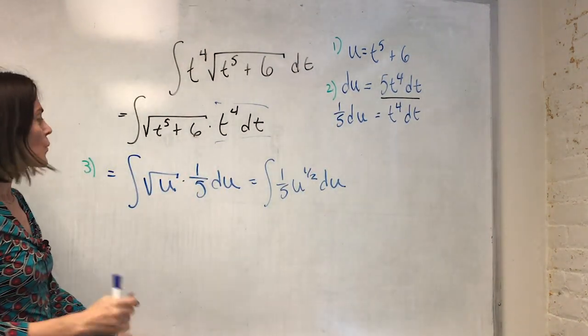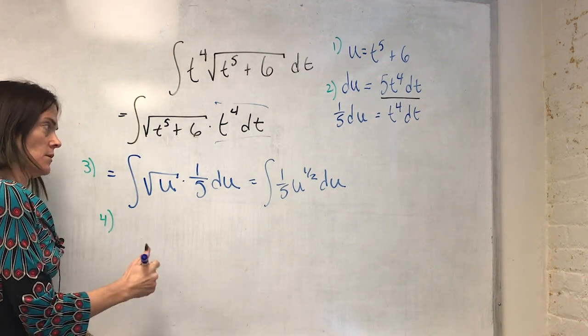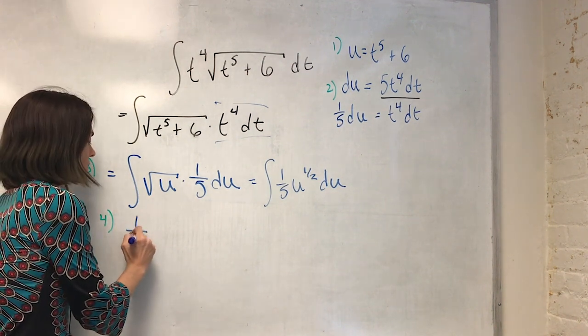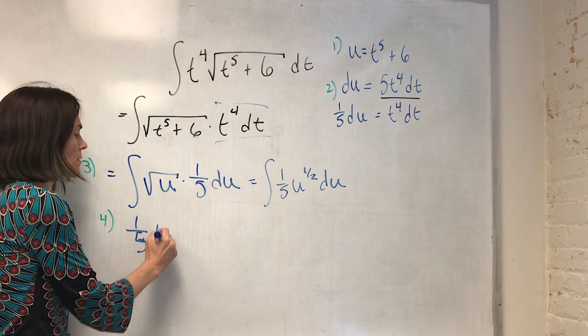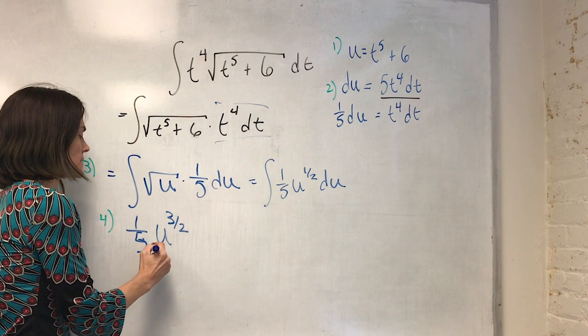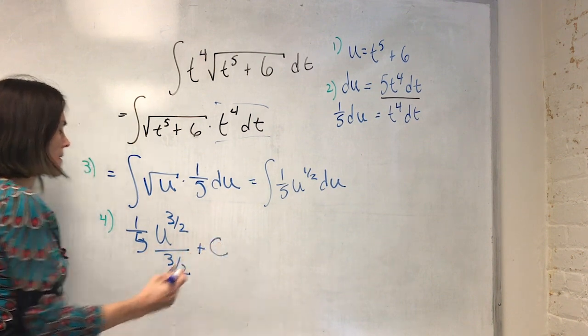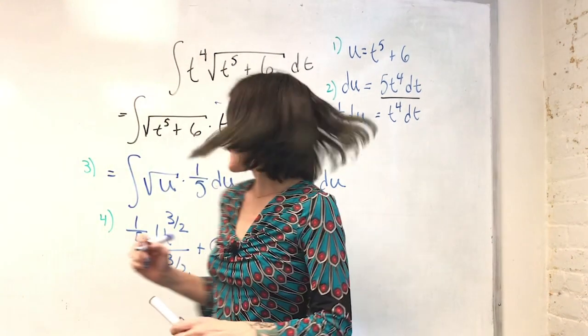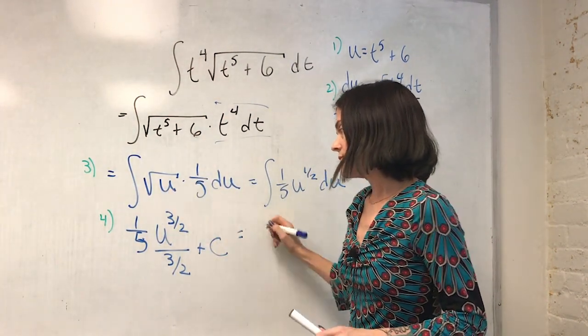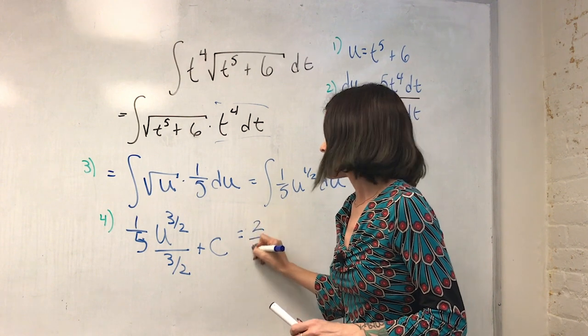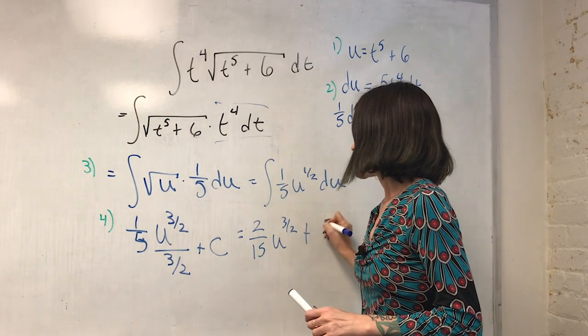Step four, we integrate. When we integrate, we have one-fifth. Then we add a power, plus c, which maybe we can make this look a little bit nicer. We have here, this is going to be a two over 15, u to the three-halves, plus c.